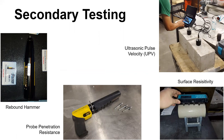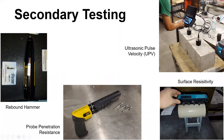For secondary testing: the rebound hammer measures uniformity, probe penetration resistance measures concrete strength, and surface resistivity with the four-point Wenner probe (Resipod) is becoming more and more prevalent. You can also use ultrasonic waves to measure cracks, voids, and other features in concrete — there's a lot of powerful work you can do with secondary testing.